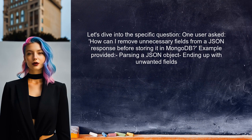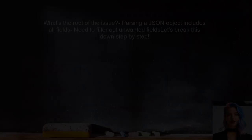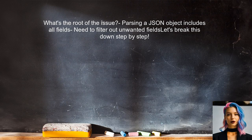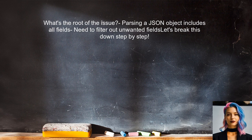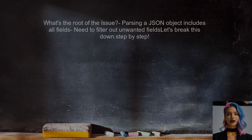Let's explore how to tackle this problem. What's the root of the issue? When you parse a JSON object in TypeScript, it can include all fields from the original response. If your interface only defines certain fields, you need a way to filter out the rest. Let's break this down step by step.